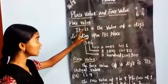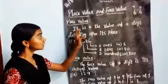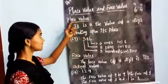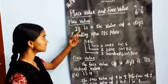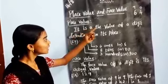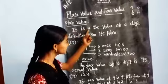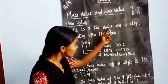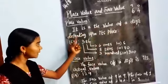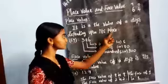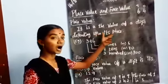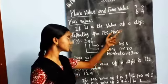Now place value is being used with 3-digit numbers. Place value meaning: it is the value of a digit depending upon its place.